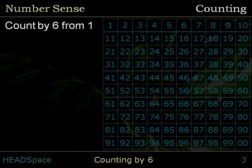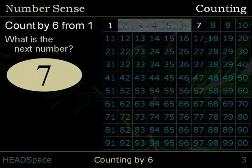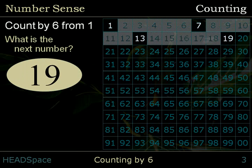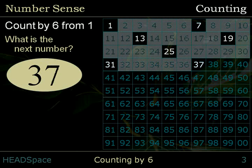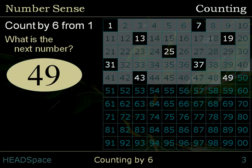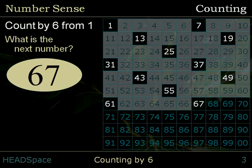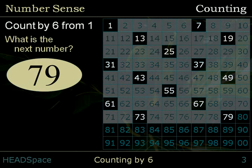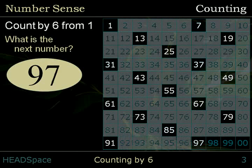Count by 6 from 1. What is the next number? 1, 7, 13, 19, 25, 31, 37, 43, 49, 55, 61, 67, 73, 79, 85, 91, 97.